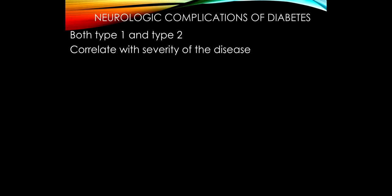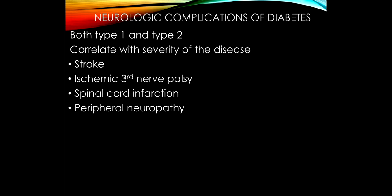Diabetes is probably the most common condition associated with neurologic complications, seen in both type 1 and type 2, and we've covered that a lot already in this course. In general, with one notable exception we'll discuss shortly, the worse the diabetes is and the more persistent the hyperglycemia, the more likely you're going to have a neurologic complication.